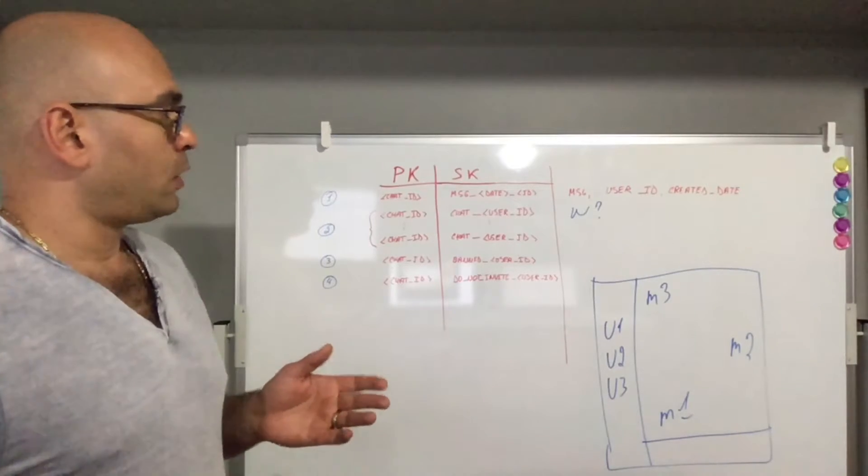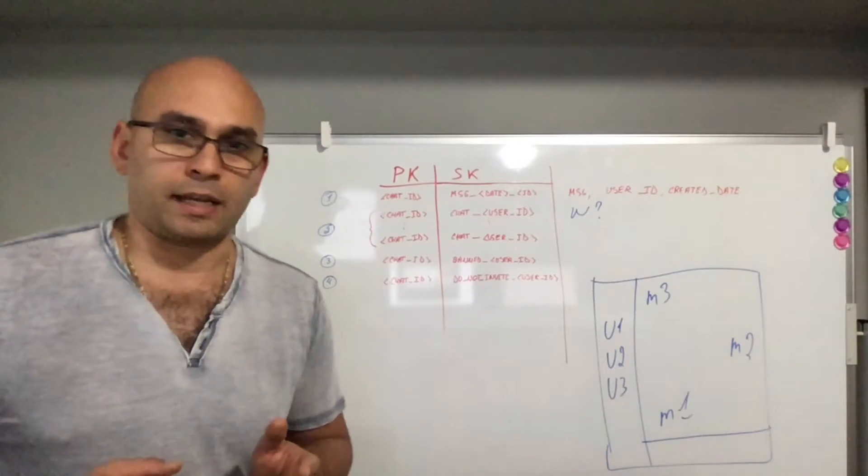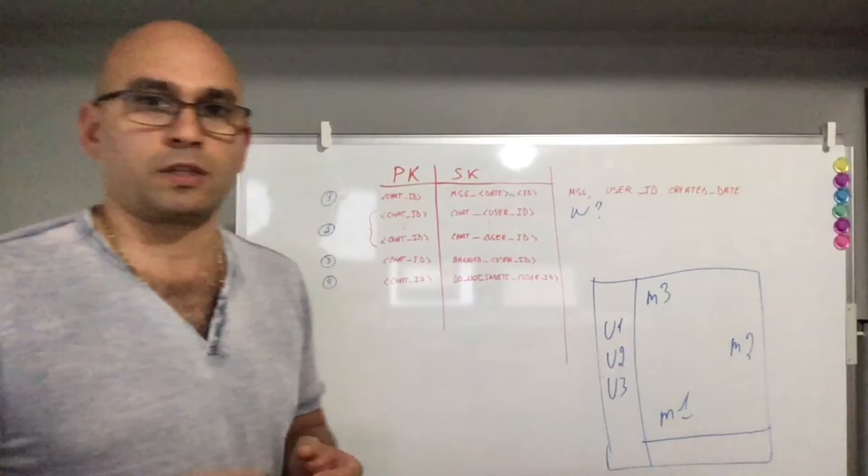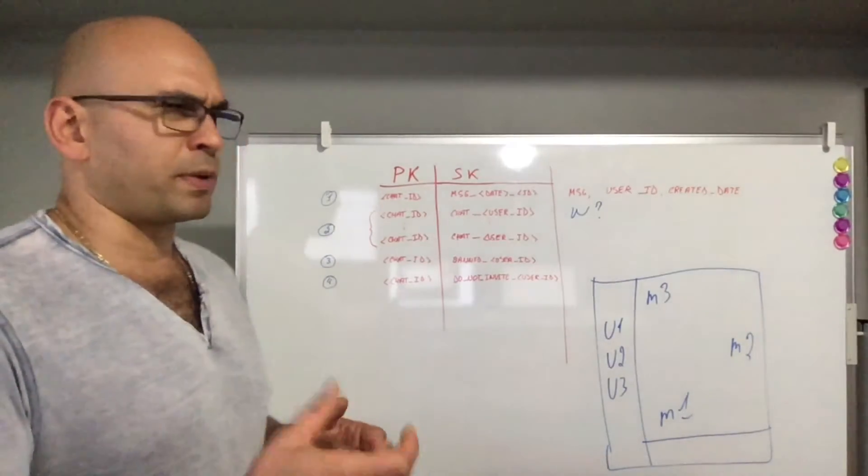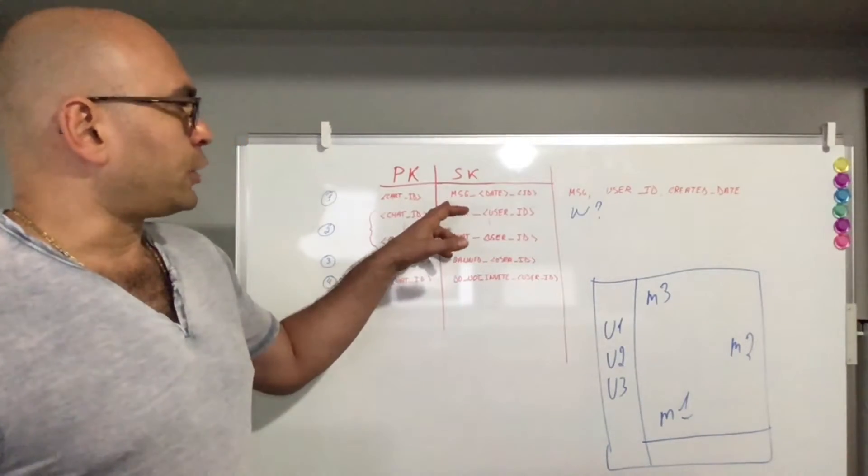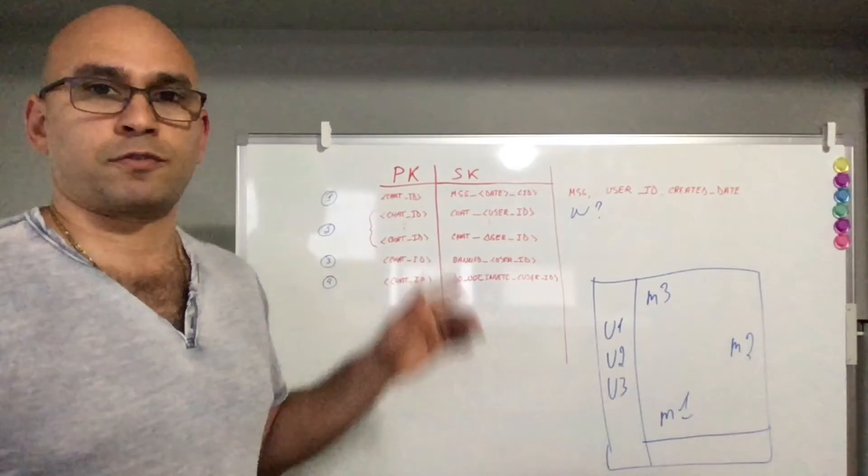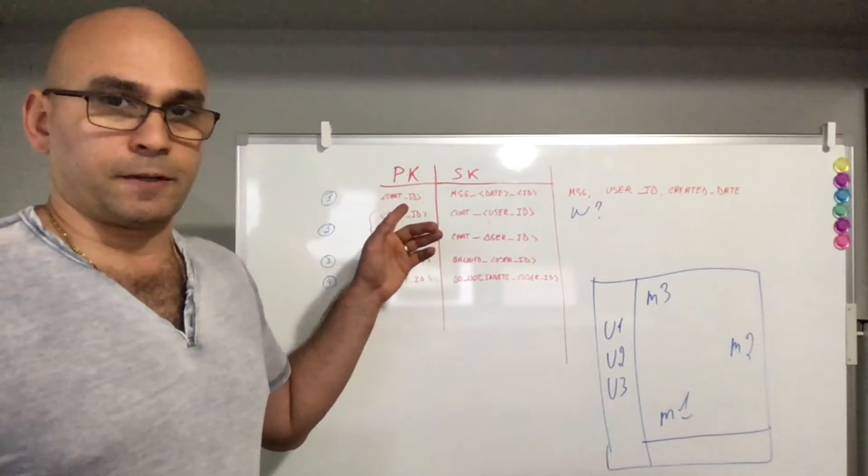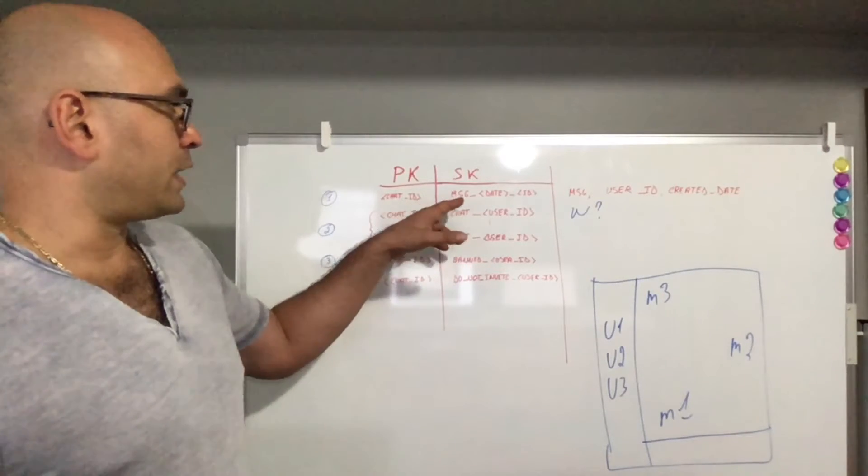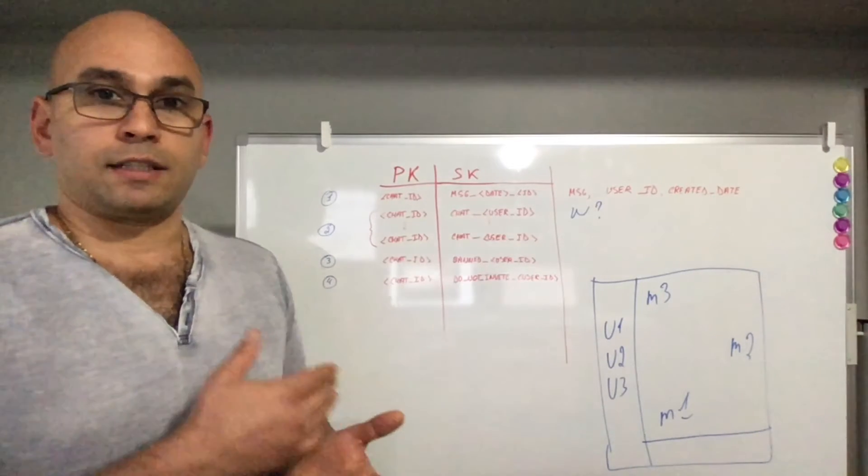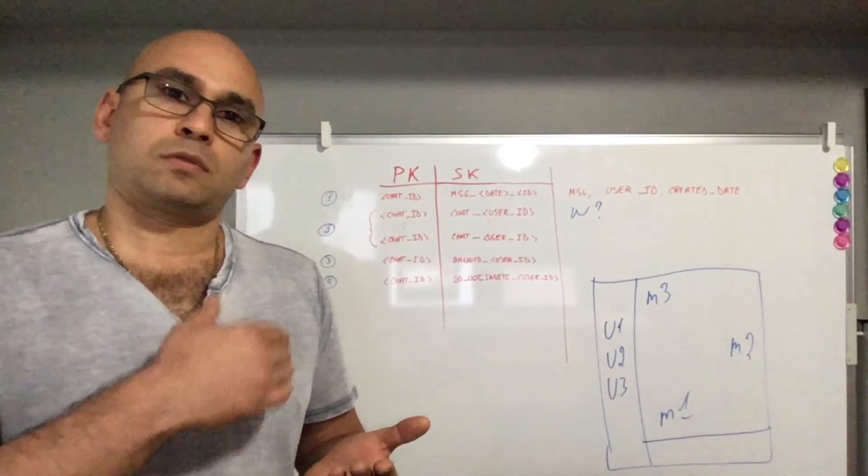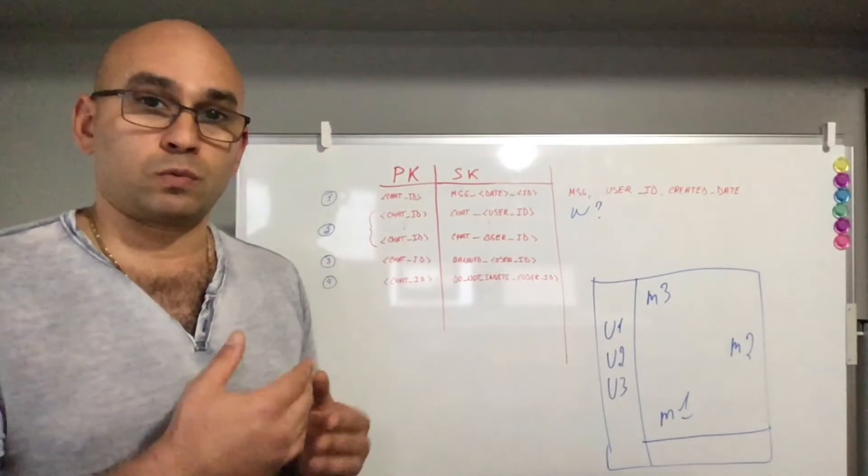So why did I do this? Well, because you can then run a DynamoDB query operation with begins_with, and you'll be able to get all of the messages or subset of the messages for this particular chat ID that begin with message underscore, and it's going to be sorted based on the date, which is quite easy to display the information.